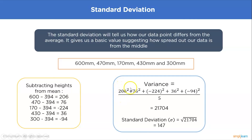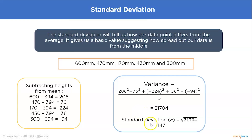Next, square all the differences, add them up, and divide by the total number of values — this is called the variance. The variance in this case is 21,704. Taking the square root gives us the standard deviation of 147. This tells us how data points differ from the average, and when plotted, a standard deviation of 147 means the curve has a width of 147 points around the mean.